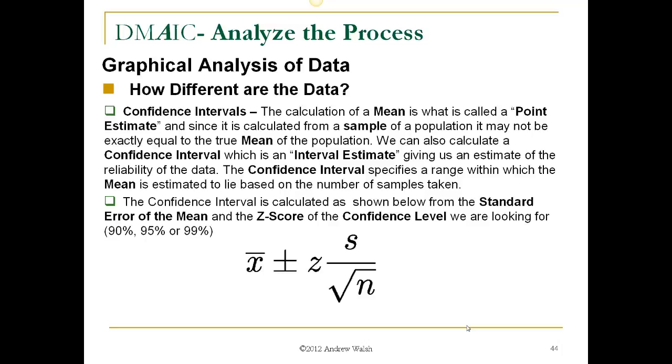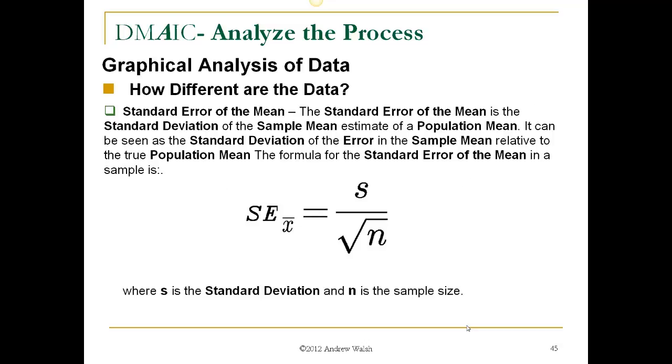So how different are the data? Confidence intervals. The calculation of a mean is what is called a point estimate. And since it is calculated from a sample of a population, it may not be exactly equal to the true mean of the population, which is theoretically never known. We can also calculate a confidence interval, which is an interval estimate, giving us an estimate of the reliability of that data. The confidence interval specifies a range within which the mean is estimated to lie based on the number of samples taken. The confidence interval is calculated as shown below from the standard error of the mean and the z-score of the confidence level we are looking for, which is usually 90%, 95%, or 99%. The standard error of the mean is the standard deviation of the sample mean estimate of a population mean. It can be simply seen as the standard deviation of the error in the sample mean relative to the true population mean. The formula for the standard error of the mean in a sample is the standard error of the mean is the standard deviation divided by the square root of n. And n is the sample size.